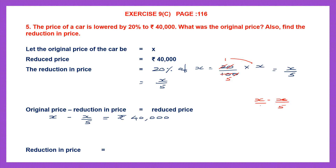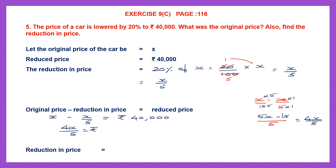Let's give x a denominator of 1. The LCM will be 5. So the first fraction: 1 into 5 is 5, so x into 5 will be 5x. Minus the second fraction — denominator is 5, so x into 1 is x. Now 5x minus x: 5 minus 1 is 4, giving us 4x by 5.